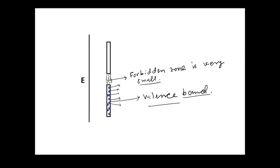The band gap is small for semiconductors — less than 2 electron volts. For insulators it is greater than 4 electron volts. If an electron is present in the conduction band, it can conduct electricity, and this is what happens in the case of a semiconductor.